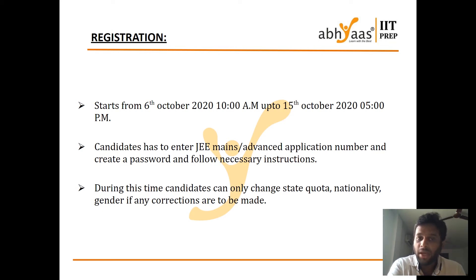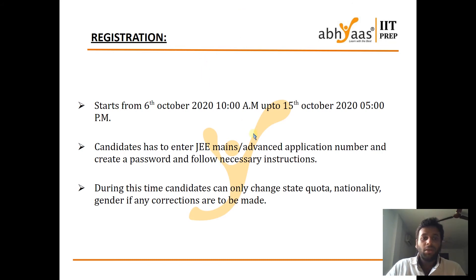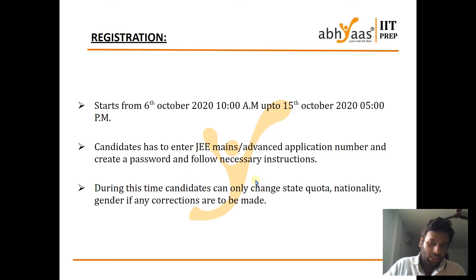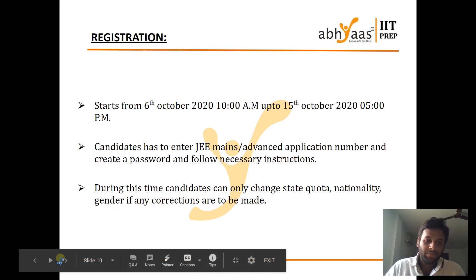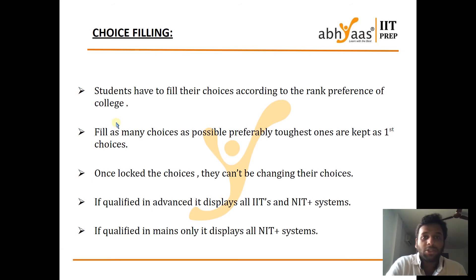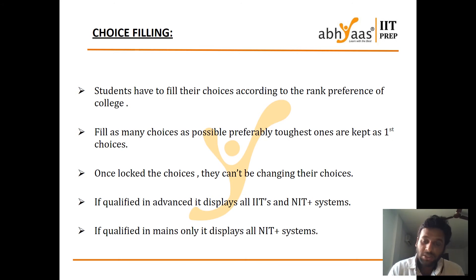Now comes choice filling. After registration, it would be choice filling. Students have to fill their choices by rank preference. From the list I have mentioned before, check your choices and ranks, and accordingly fill up the choices. First preference should be the toughest ones - your dream college, the hardest college to get into, should be kept as first preference. The toughest ones are kept on top and then you come to the lowest positions. Once the choice is locked, there can't be any changes - you can't change them till the end of counseling. Before locking the choices, check them once because you can't change them till the end of the round.